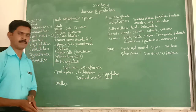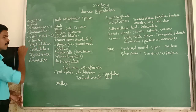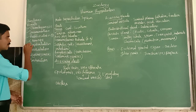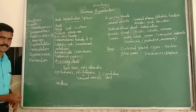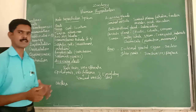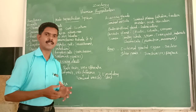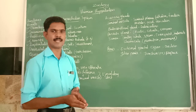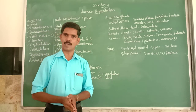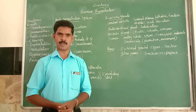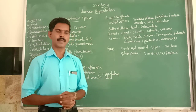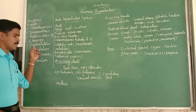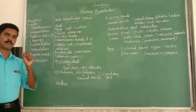The next event is implantation — where the zygote is implanted or attached to the wall of the uterus of the female reproductive system. This is called implantation.